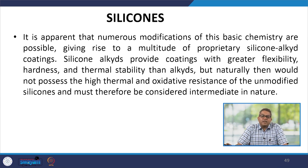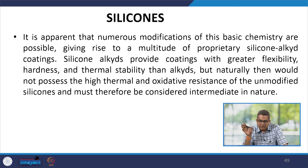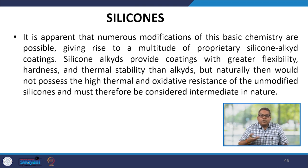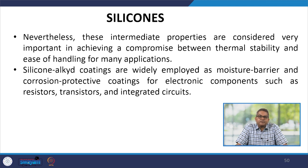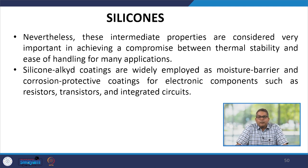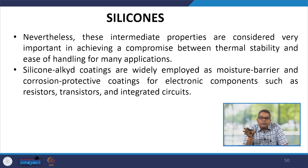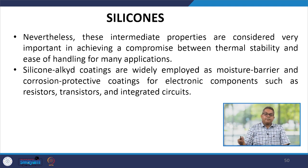Numerous modifications of this basic chemistry are possible, giving rise to a multitude of proprietary silicon alkyd coatings. Silicon alkyd provides coatings with greater flexibility, hardness and thermal stability than alkydes, but does not possess the high thermal and oxidative resistance of unmodified silicones and must therefore be considered intermediate in nature. These intermediate properties are important for achieving a compromise between thermal stability and ease of handling for many applications. Silicon alkyd coatings are widely employed as moisture barriers and corrosion protective coatings for electronic components like resistors, transistors and integrated circuits.